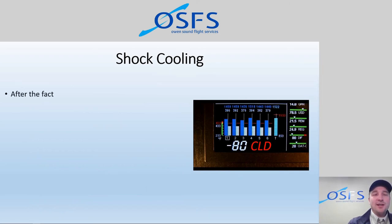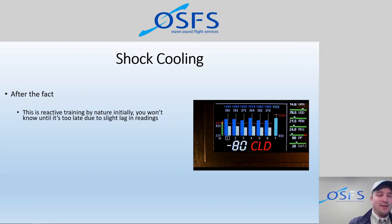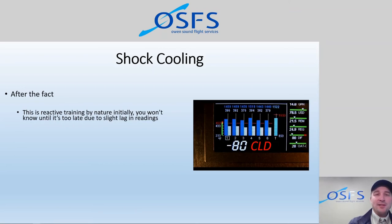The problem with the shock cooling feature of the EDM is it's a bit laggy and pretty slow. If you were to pull the power all the way to idle quickly and watch that number change, it would read zero for about five to seven seconds, then go to minus 20, then a few seconds later minus 30, then minus 40. It takes a while before it registers the final result of how cool it was — very likely due to the sampling rate, which I think is every six seconds. You can also change that sampling rate to something faster, but the problem is by the time you see the final result, it's probably too late — you've already exceeded 50 Fahrenheit per minute.